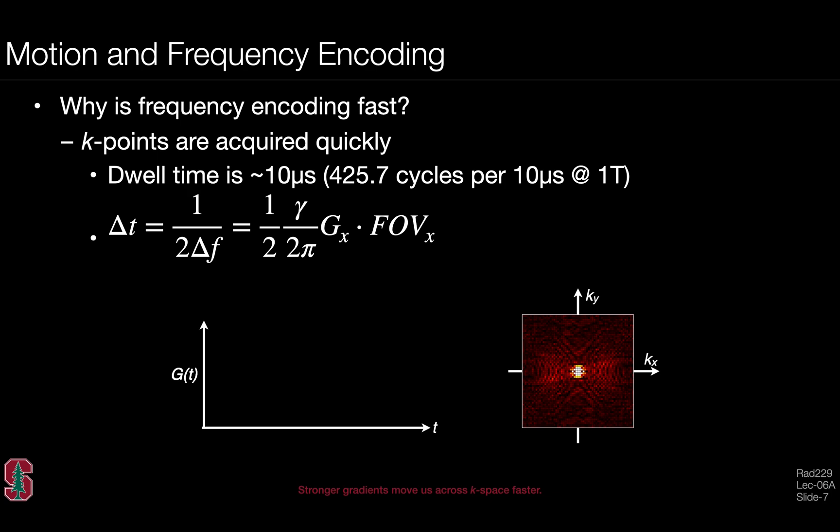Motion encoding is actually less of a problem in the frequency encoding direction, in part because frequency encoding is, in fact, so fast. Why is frequency encoding fast? The K points that we acquire during imaging are acquired very quickly. The dwell time is only about 10 microseconds. And interestingly, in a period of about 10 microseconds, the transverse magnetization will undergo many hundreds of cycles of precession, in this example here at one Tesla.